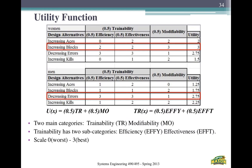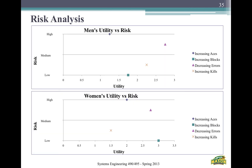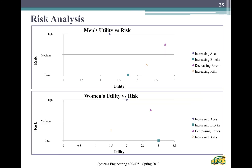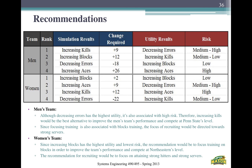The utility function was based on two main categories: trainability and modifiability, with trainability having two subcategories — efficiency and effectiveness. Coaches were asked to input how they felt about their performance on these dimensions. For the men's program, decreasing errors had the most utility with medium-to-high risk. The women's program also ranked decreasing errors as the highest utility alternative. Simulation results and utility results are slightly different, as shown in the graphs.